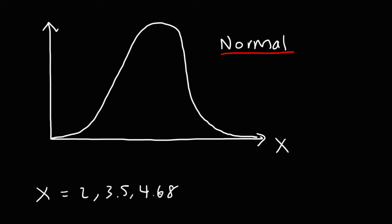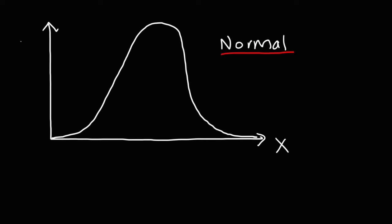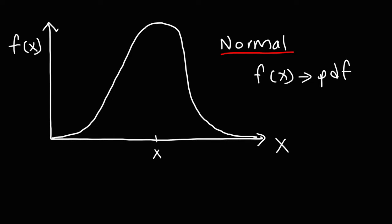Now if we had discrete random variables, x would have restrictions — it could be like 1, 2, 3, 4, 5. But when dealing with continuous random variables, x could be anything; it could take on any value. On the y-axis, we have the function f of x, also known as the PDF, which stands for the probability density function. f of x tells us the height of the curve above the x-axis at some point x.